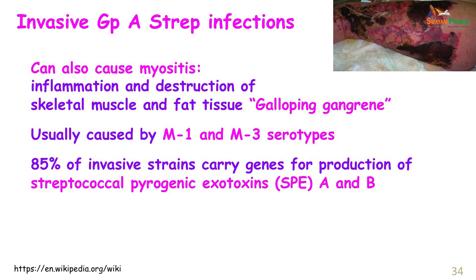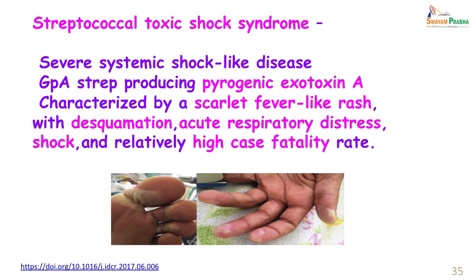This can lead to inflammation and destruction of the fascia over the skeletal muscles, leading to necrotizing fasciitis — hence they are called flesh-eating group A streptococci. These invasive infections can also cause myositis, with inflammation and destruction of skeletal muscles and fat tissue giving rise to galloping gangrene. These infections are usually caused by M1 and M3 serotypes, which carry the genes for pyrogenic streptococcal exotoxins. Streptococcal toxic shock syndrome is produced by group A streptococci producing pyrogenic exotoxin A, characterized by a scarlet fever-like rash with desquamation, acute respiratory distress, shock, and a relatively high case fatality rate.